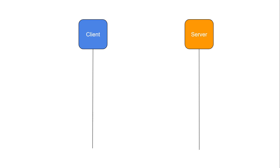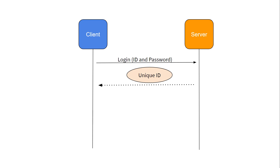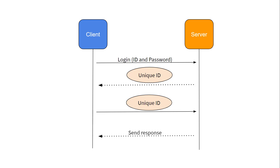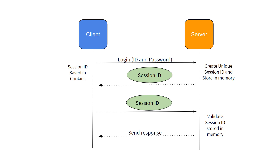In any client-server architecture where we want to protect the resources on the server from unauthorized access, we first need to verify the user's identity using some credentials like user ID and password. Once the user is verified, some unique ID is given to that user and the user is authenticated with that unique ID for all subsequent requests. It is just like when you enter into any organization — the security guard provides you a temporary ID card if you are a visitor, and that identity card gives you access to the different cabins in the organization. You do not have to provide your original ID further in the office. This unique ID is usually stored in the memory at the server end and it is called session ID. This session ID is stored in the cookies at the client end. This type of authentication is called session-based authentication.